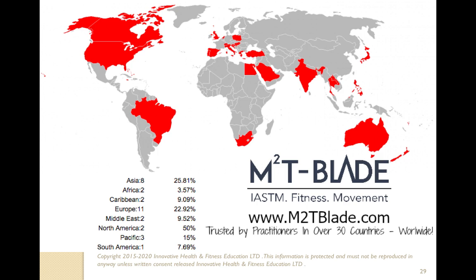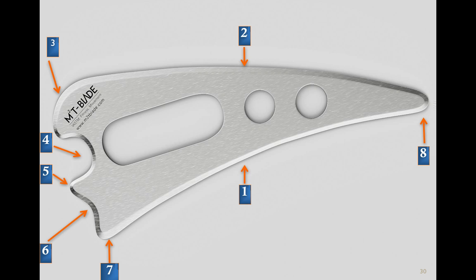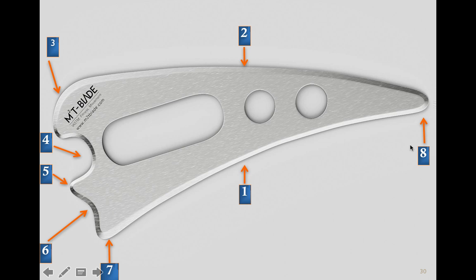The M2T blade is used in over 34 countries — including the Kingdom of Bahrain and Vietnam — making it one of the most widely used instruments. On the tool, the M2T blade logo is on one side, cut at a 35-degree angle to achieve soft tissue treatment. We have eight treatment points. Treatment edges one and two help scan and treat superficial edges. Counterclockwise, we have edges three through eight. While a lot of our competition has many separate tools, we've created one tool that is eight tools all in one.